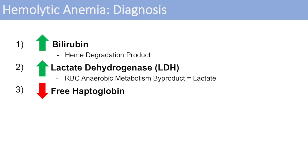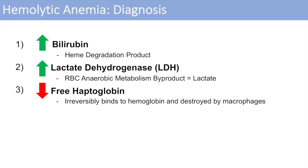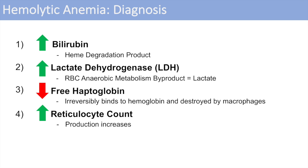The third diagnostic marker is a decrease in free haptoglobin. As mentioned, haptoglobin irreversibly binds to hemoglobin and is then destroyed by macrophages, so you'll see a decrease in haptoglobin levels. The fourth marker is an increase in reticulocyte count — this is a normal compensatory process. If there's a decrease in erythrocyte count, the bone marrow will compensate by increasing production of reticulocytes. We call this left shifting — a shift in the population of red blood cells, with more reticulocytes released from the bone marrow into circulation to compensate for the decrease in erythrocytes.